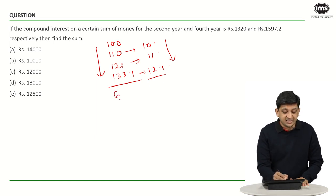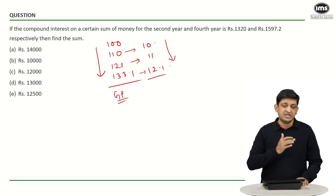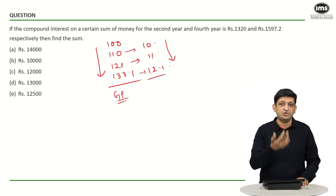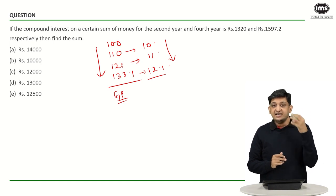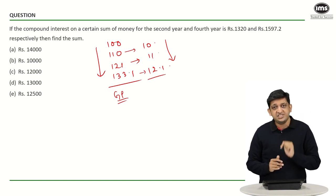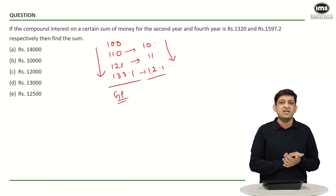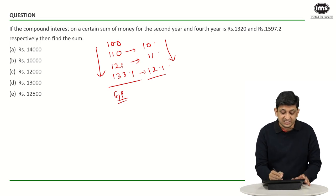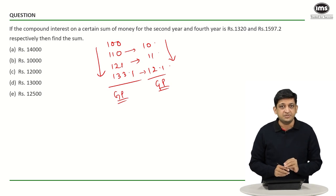If you look at all these terms — 10, 11, 12.1, 13.31 — they are in a geometric progression because the common ratio is 1.1. The amounts each year (100, 110, 121...) also multiply by 1.1. So the interest generated in each year will also be in the form of a GP.